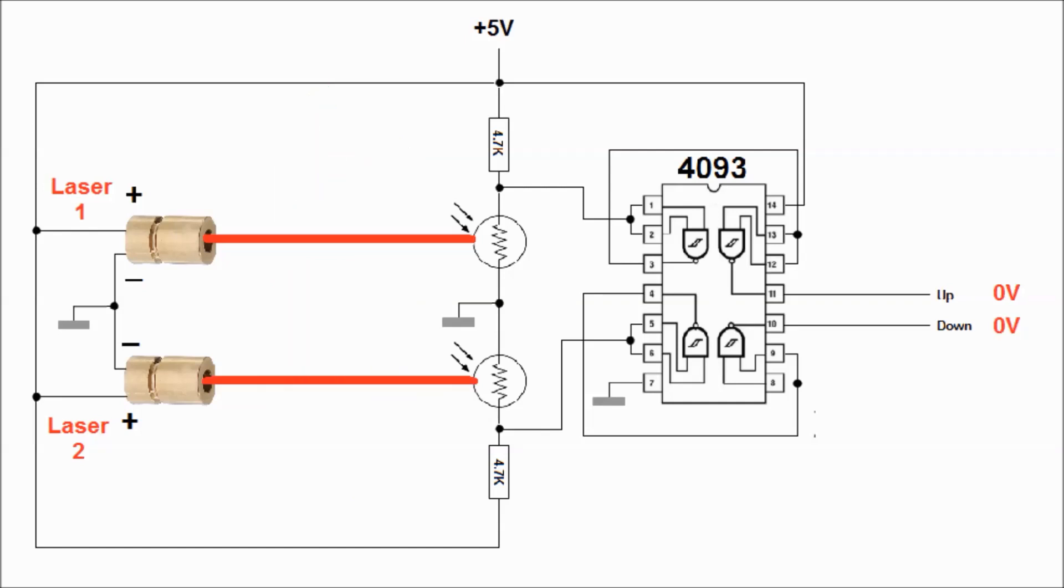Each LDR is connected with a resistor in series. The output signal from each LDR goes to a Schmitt trigger to remove the noise.